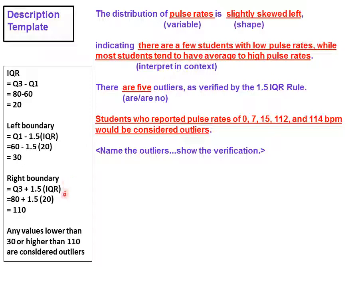The right boundary, we take the IQR, multiply by 1.5, and add it to Q3. So 80 plus 1.5 times 20 gives us 110. As a result, any values lower than 30 or higher than 110 would be considered outliers. And you can see that our five numbers meet those conditions.